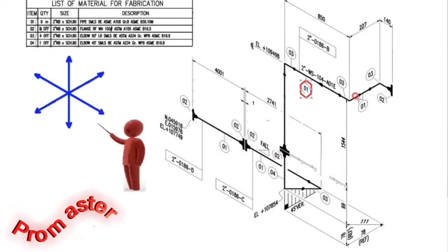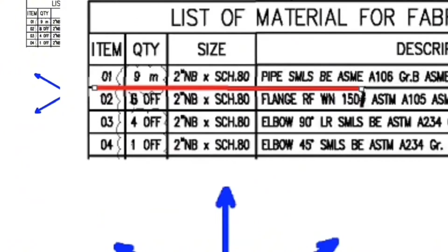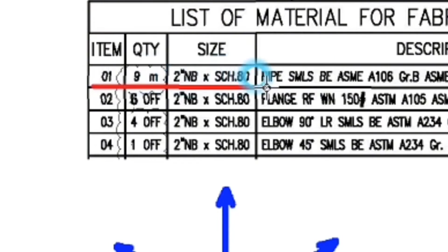These are details number 1. We look at the material list. Detail number 1: 9 meters, 2 inch, schedule 80, pipe, ASME A106.